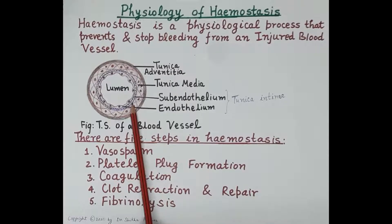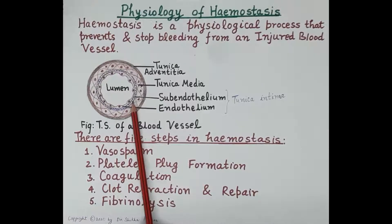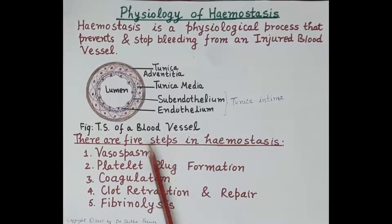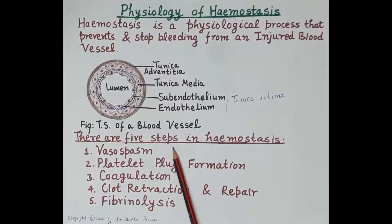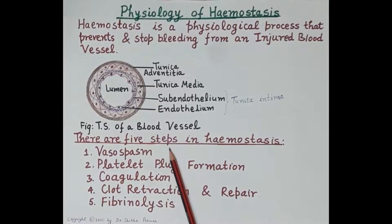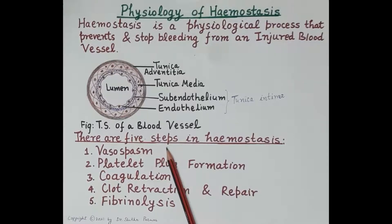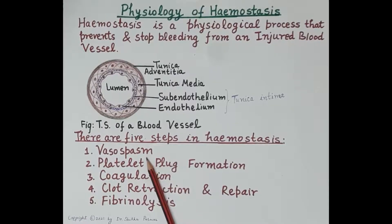Whenever there is injury in the wall of the blood vessel, this collagen is exposed and comes in contact with the blood, which initiates the process of clot formation. There are five steps in the process of hemostasis, and we will study all the different processes one by one.